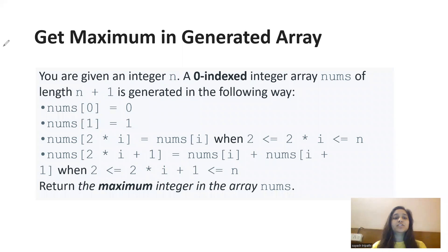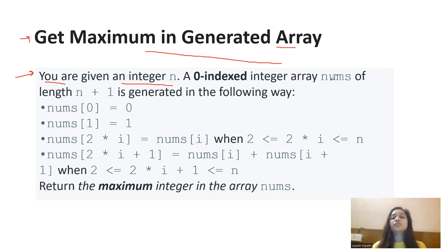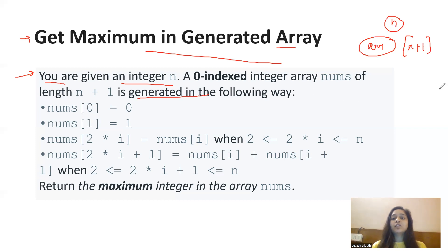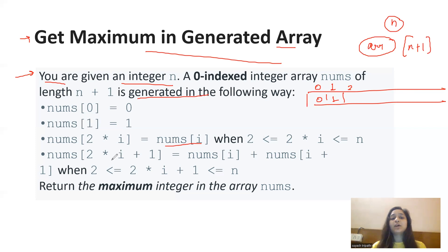The question is 'Get Maximum in the Generated Array.' The problem statement states: you are given an integer n. A zero-indexed integer array nums of length n+1 is generated in the following way — nums[0] = 0, nums[1] = 1, and then nums[2i] = nums[i] and nums[2i+1] = nums[i] + nums[i+1].